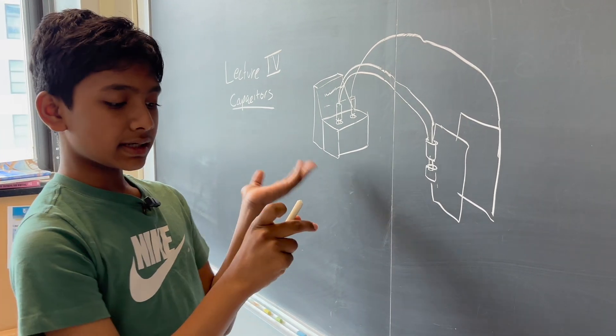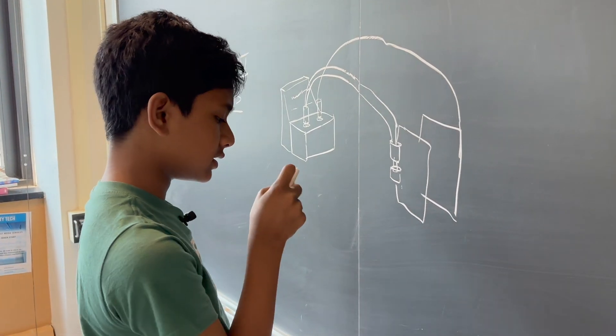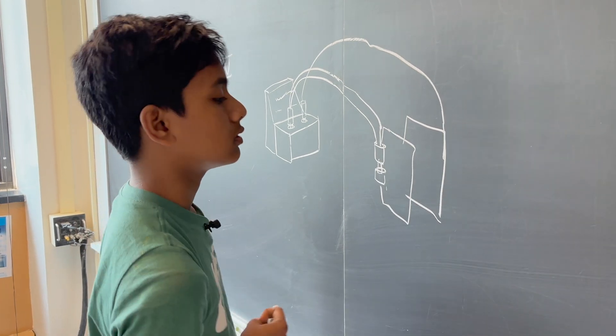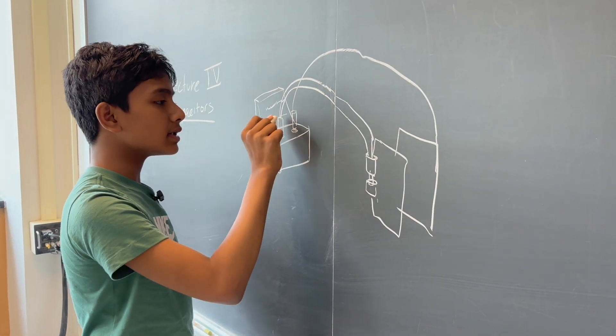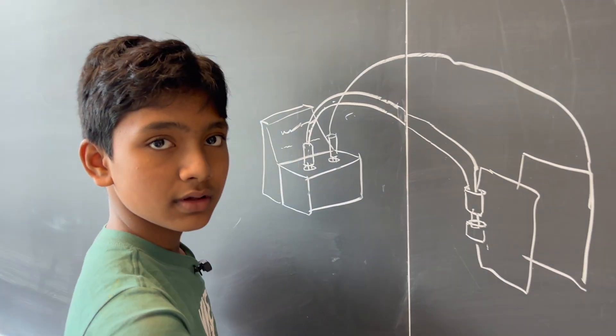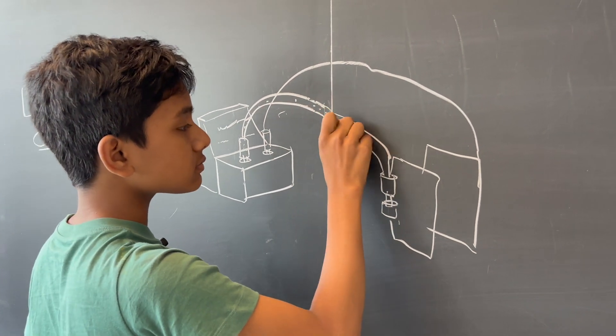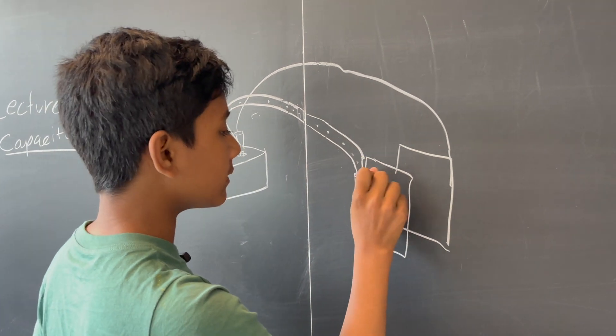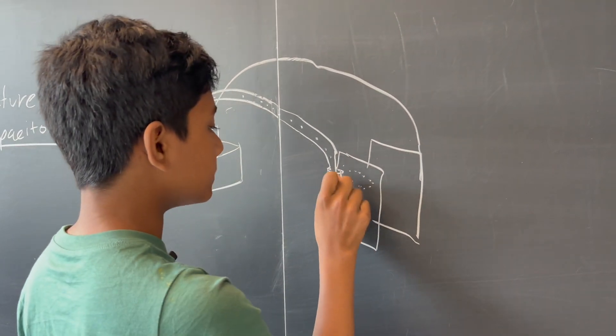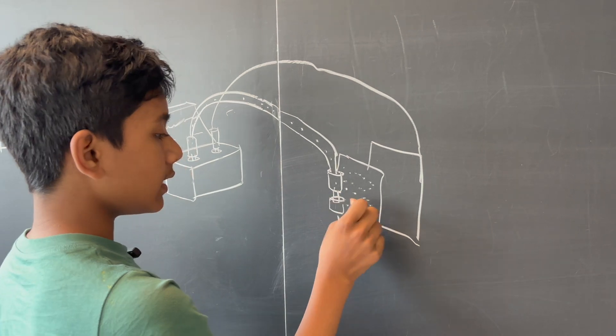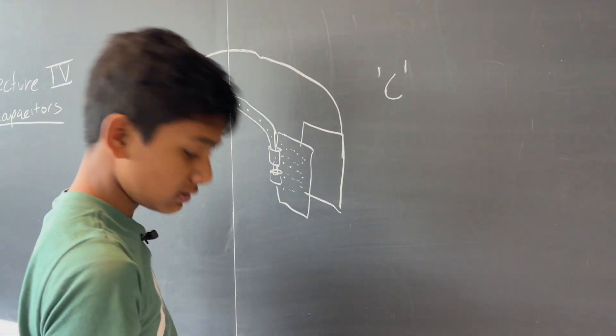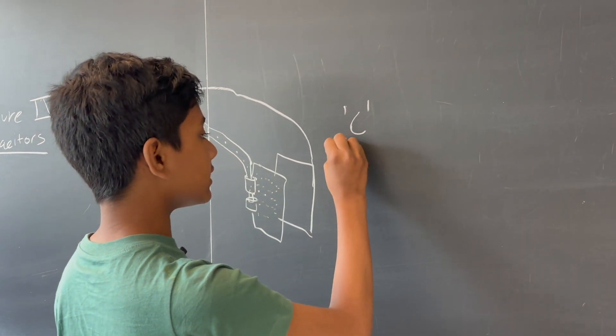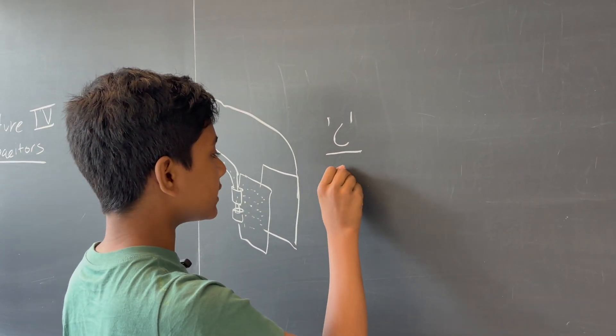So what does the capacitor actually do in this situation? Well, the capacitor is essentially taking electrons and transporting them to be held on the plate. And this plate's capacitance, represented by C, essentially represents its ability to hold charge.